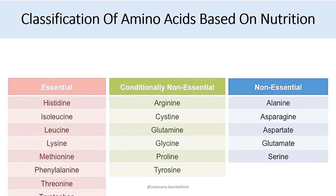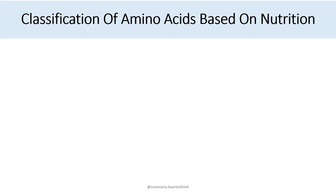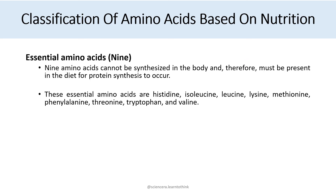Classification of amino acids based on nutrition: there are essential amino acids and non-essential amino acids. There are nine essential amino acids — those that cannot be synthesized in the body and therefore must be present in the diet for protein synthesis to occur.